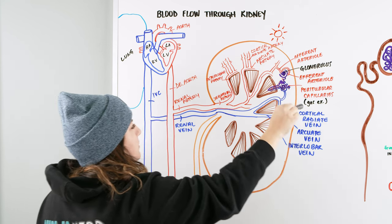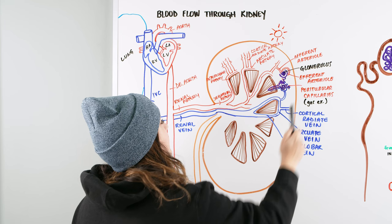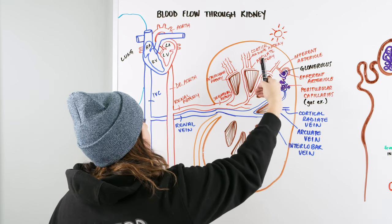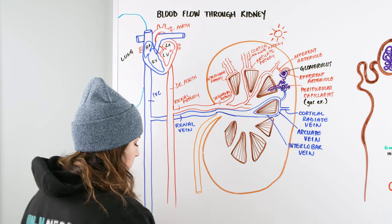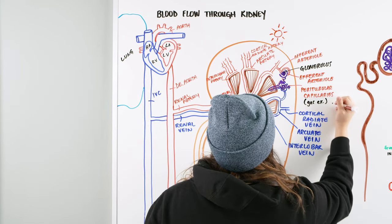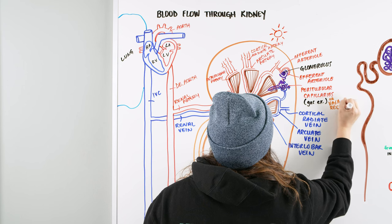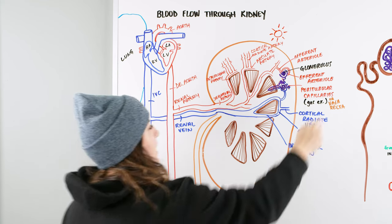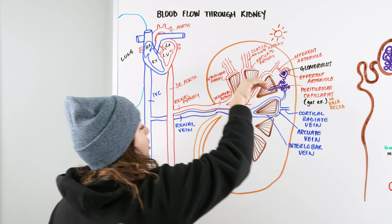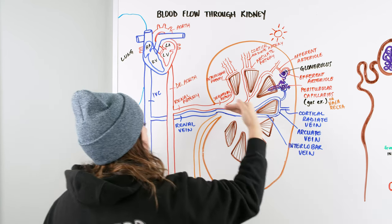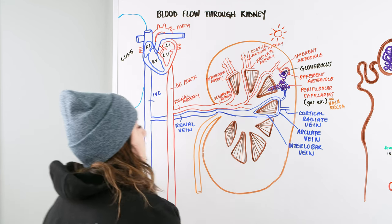From the glomerulus, blood goes through the efferent arteriole, then the peritubular capillaries — and a bonus point: if those peritubular capillaries are in the medulla rather than the cortex, they're called the vasa recta. Gas exchange occurs at the peritubular capillaries. We then go to the cortical radiate vein, the arcuate vein, down through the interlobar vein, out through the renal vein, and up the IVC. That is blood flow through the kidney.